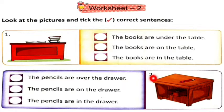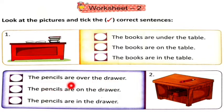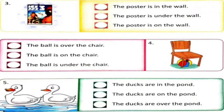Now number two. The sentences are: 'The pencils are over the drawer,' 'The pencils are on the drawer,' 'The pencils are in the drawer.' Yeh pencils kahaan hain? Drawer open hai, yahaan par pencils hain. Toh aapne dekhna hai kaun sa sentence correct hoga, usi par aap tick kar denge.